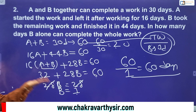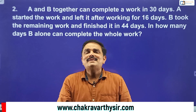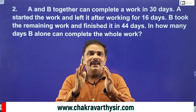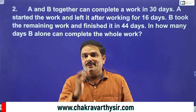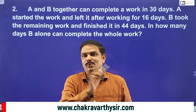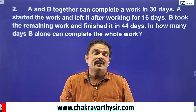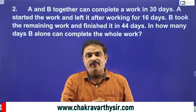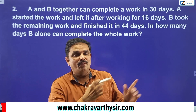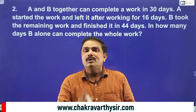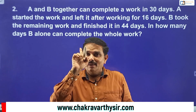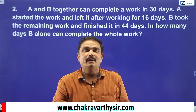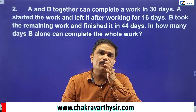Total work is 60 divided by B's one day's work of 1 unit, giving us 60 days. That is the answer using the LCM method. Now let's solve the same question with alligation rules — it won't take more than 30 seconds once you learn the method properly.